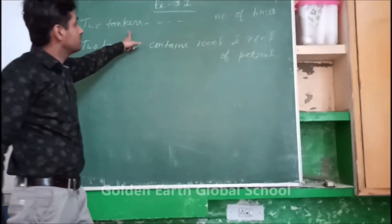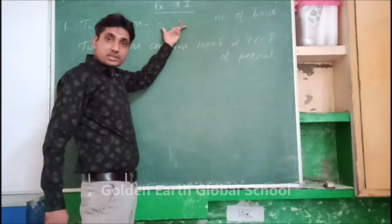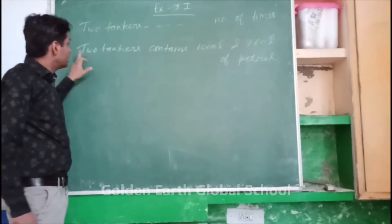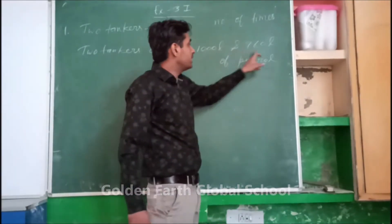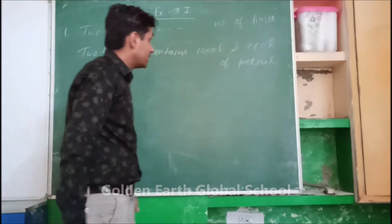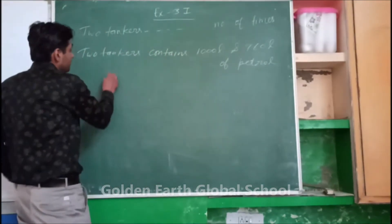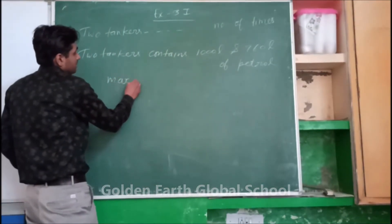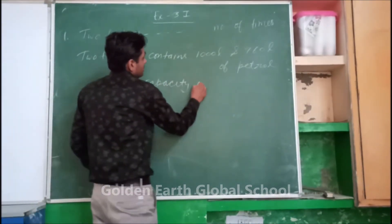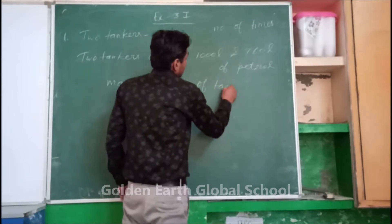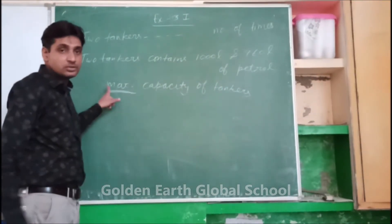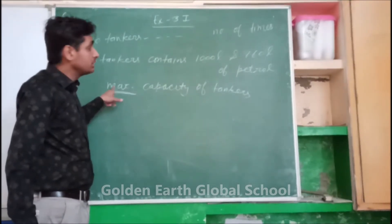Firstly, you write the question — you can put a dash in between, then write the statement also. Two tankers contain 1000 liters and 760 liters of petrol. We have to find out maximum capacity. Since the word 'maximum' is used, we have to find out HCF.